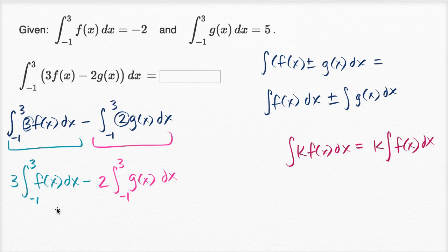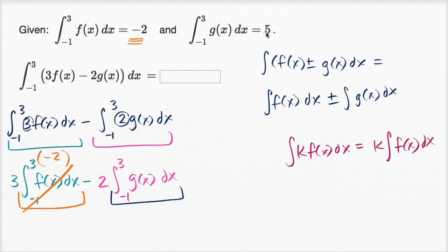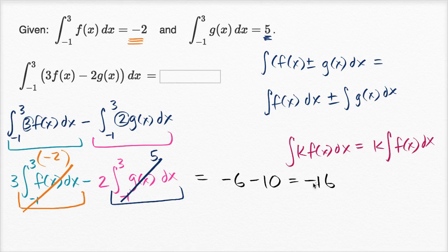What is this going to be equal to? They tell us the integral from negative one to three of f of x dx is equal to negative two. And the definite integral from negative one to three of g of x dx is equal to five. So the whole thing is three times negative two, which is negative six, minus two times five, which is minus ten — giving us negative sixteen. And we're done.